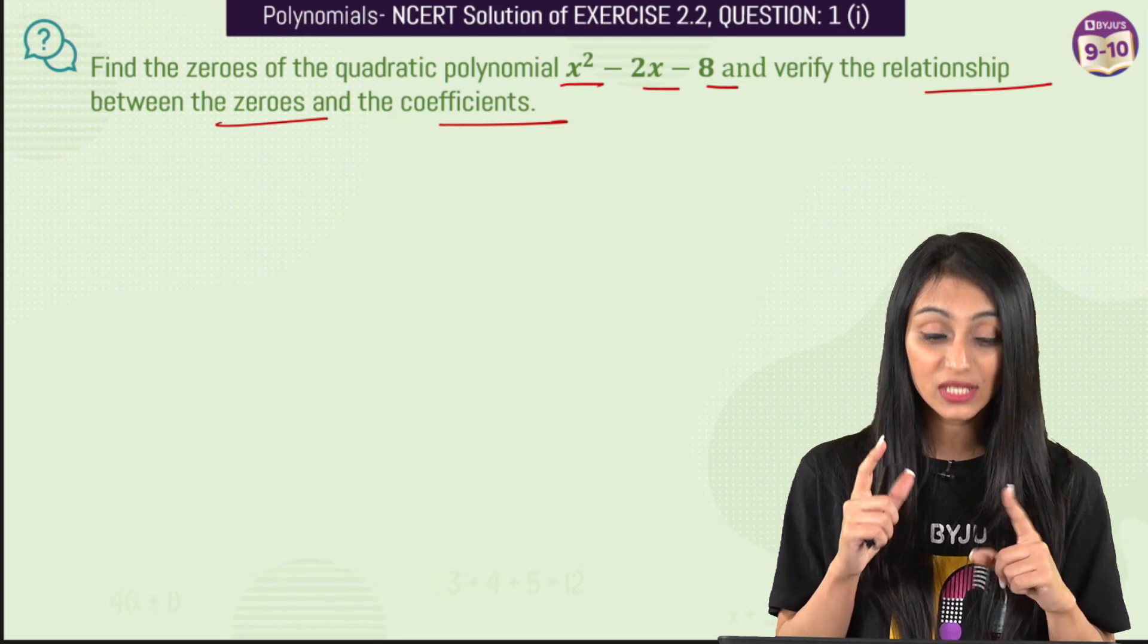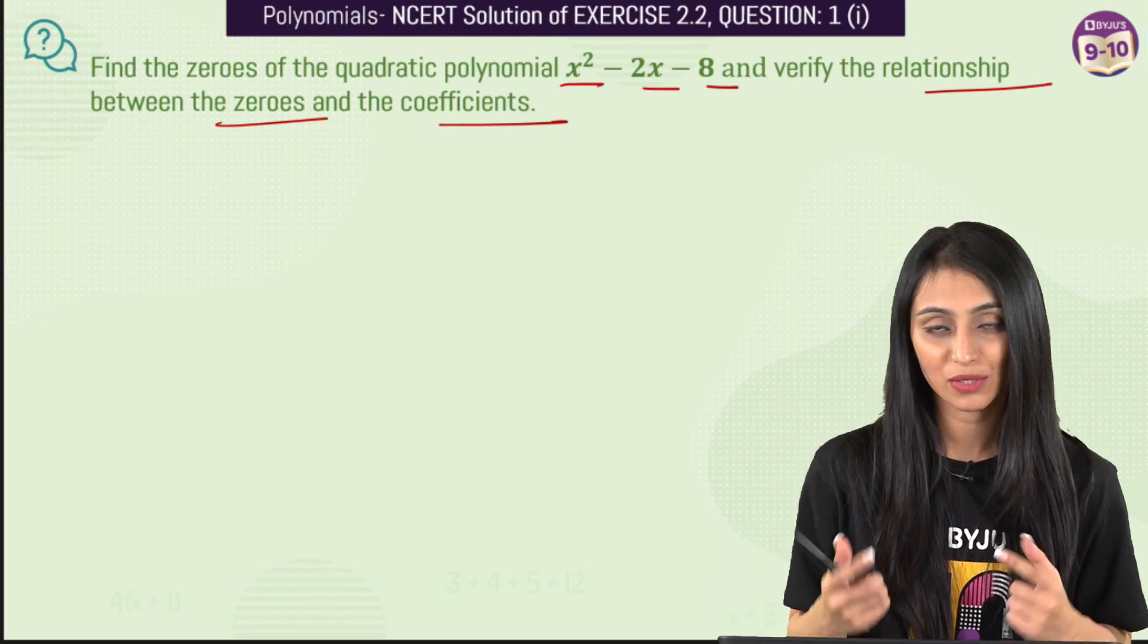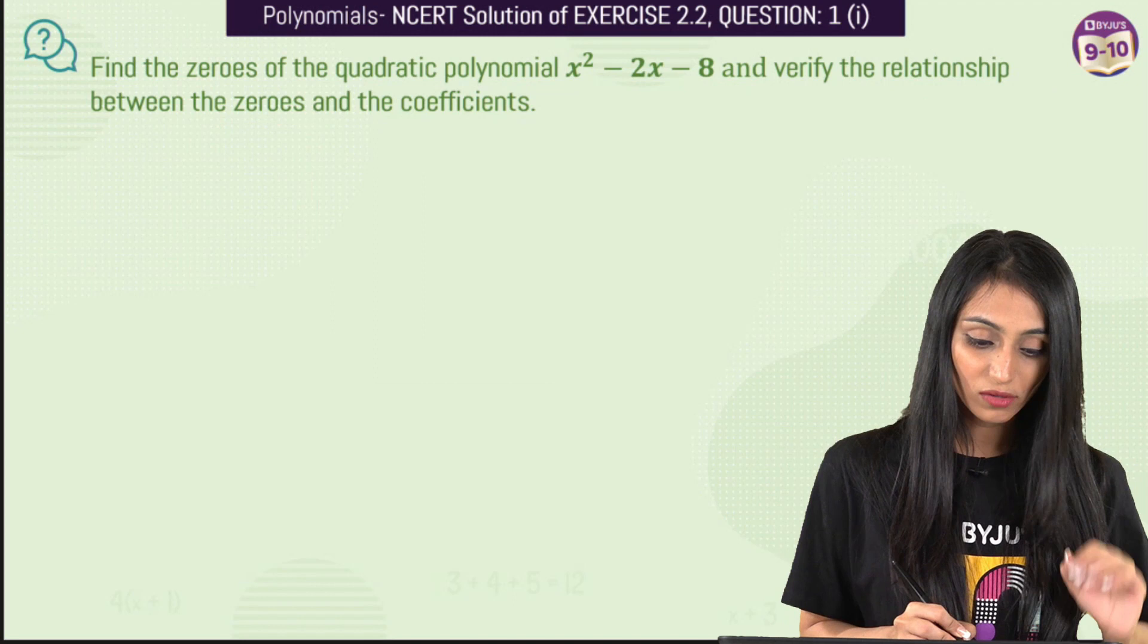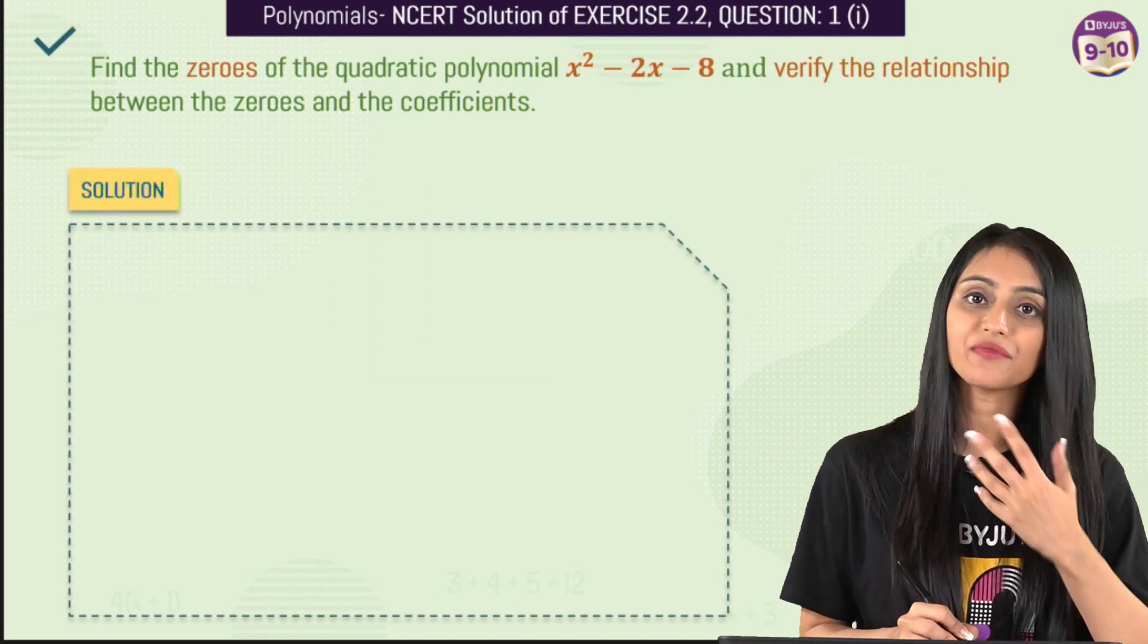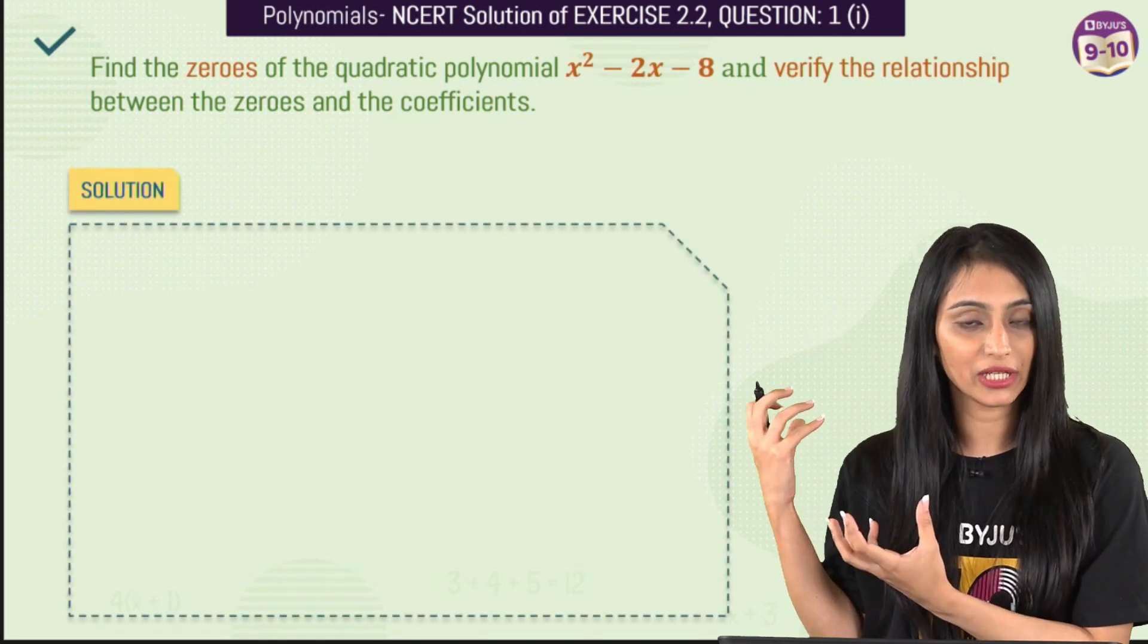Two things we have to do here: first we have to find out the zeros, then we have to verify the relationship between zeros and coefficients. Alright so what we will do here is, first let's find out the zeros because we would require them to verify the relationship.